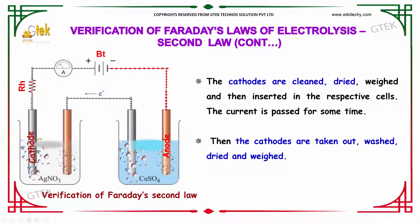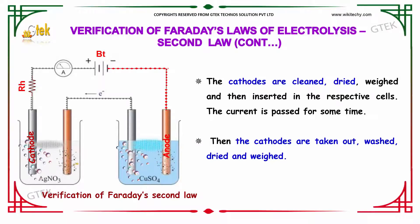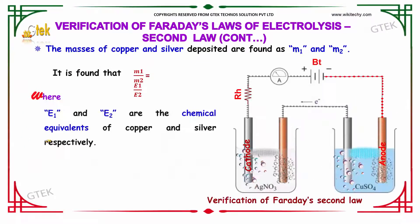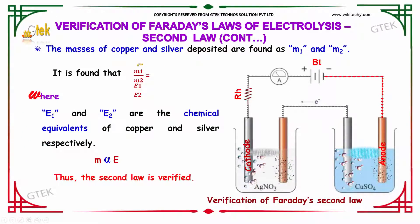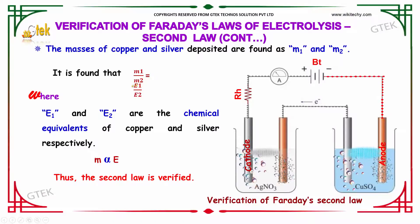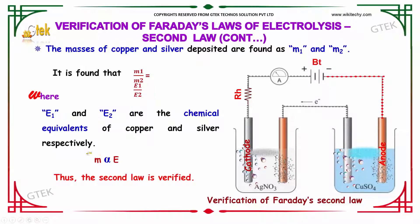The current is passed for some time. The cathodes are taken out, washed, dried, and weighed. The masses of copper and silver deposited are found as M1 and M2, and it is found that M1 divided by M2 is equal to E1 divided by E2, where E1 and E2 are the chemical equivalents of copper and silver. Therefore, mass M is directly proportional to the chemical equivalent E. This is Faraday's second law.